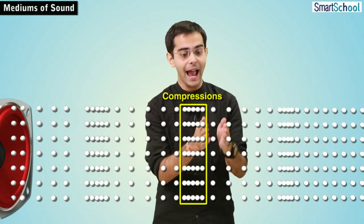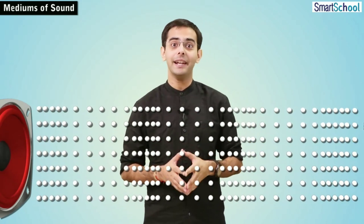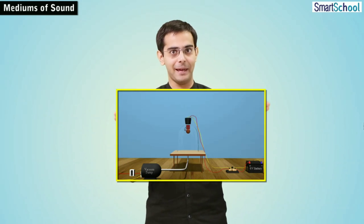Hello students. From our previous modules, we have understood that sound travels through the air by forming compressions and rarefactions. That is, it travels as a longitudinal wave and it needs air to propagate, as was established by the Bell Jar experiment.